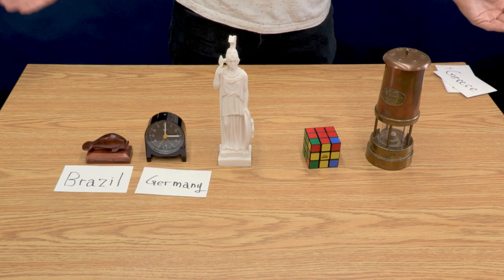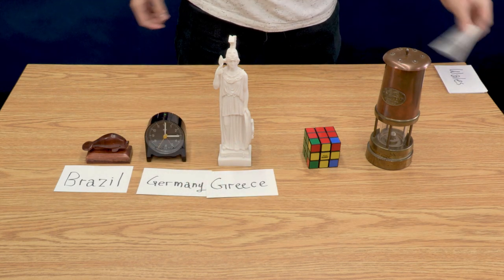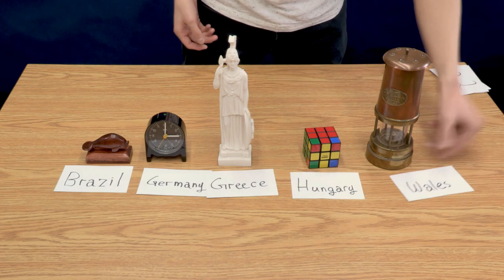And I'll do the same for the statue. It's from Greece. And the Rubik's cube is from Hungary. And the lamp, which is from Wales.